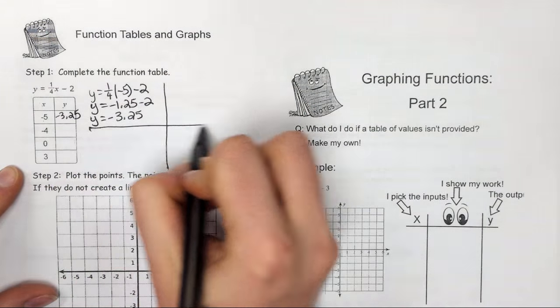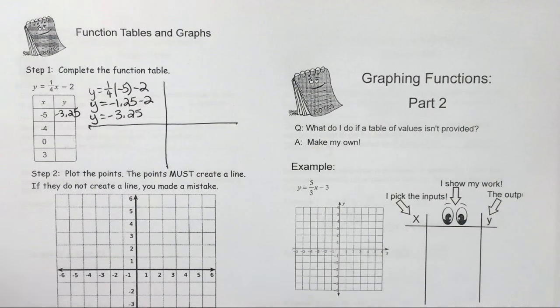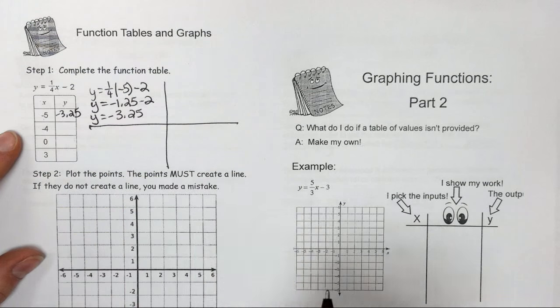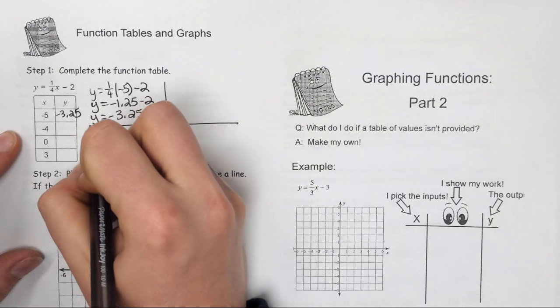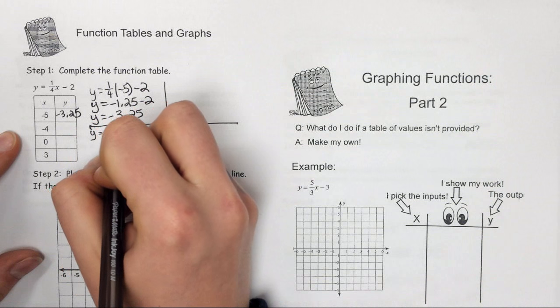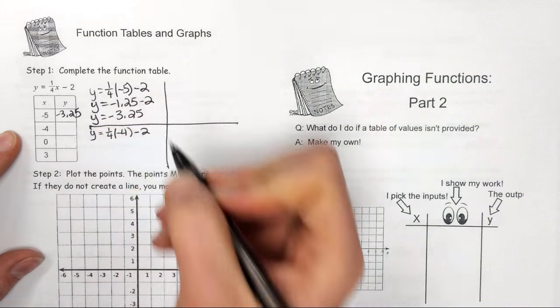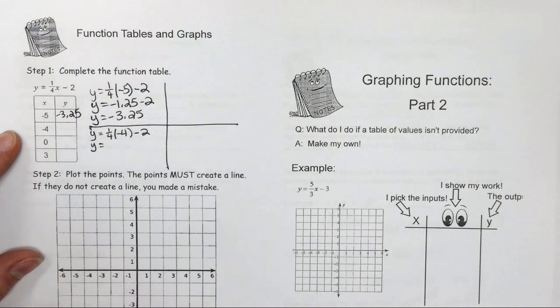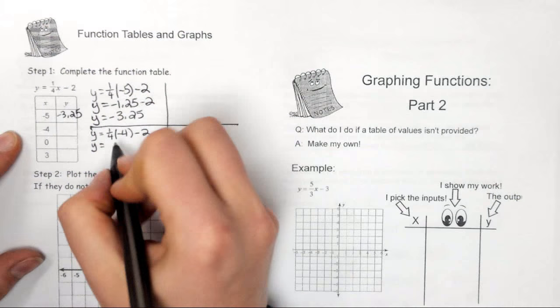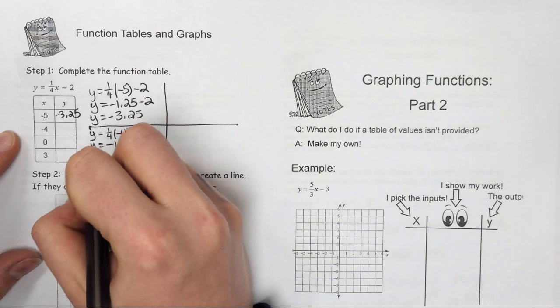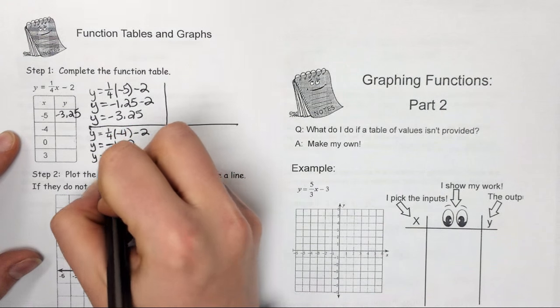I like to split up my work here so I know which work goes with which table value. The second one I have y equals 1/4 times negative 4 minus 2. And 1/4 times negative 4 gives me negative 1, and negative 1 minus 2 is going to be negative 3.